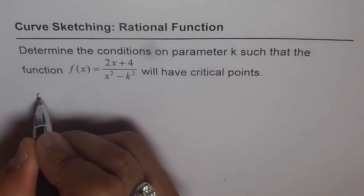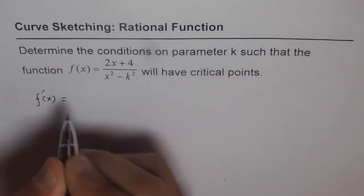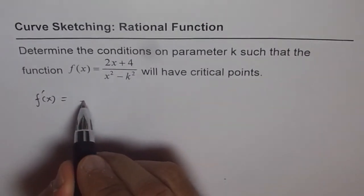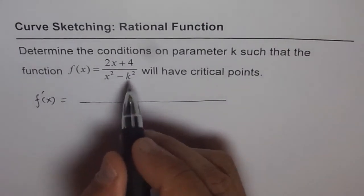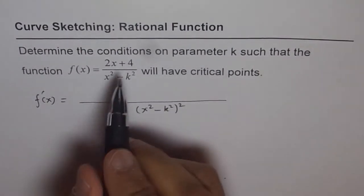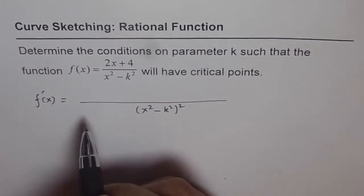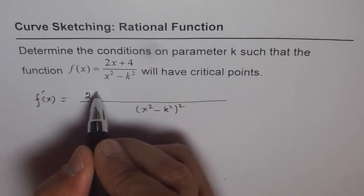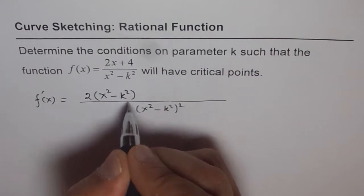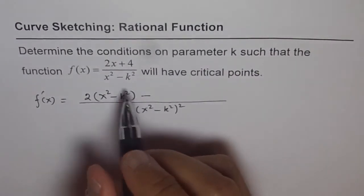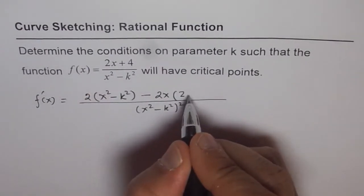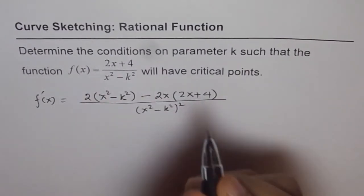Let's find the first derivative. f'(x) — this is given in quotient form, so let's use the quotient rule. The quotient rule gives us the denominator squared, times the derivative of the numerator which is just 2, times the denominator (x² - k²), minus the derivative of the denominator which is 2x, times the numerator (2x + 4).